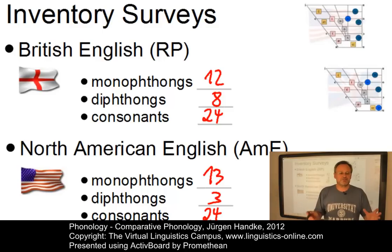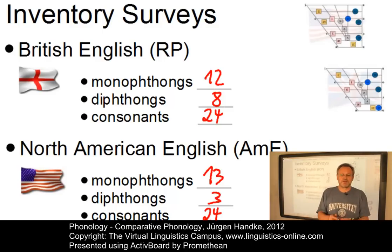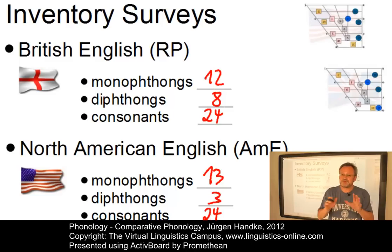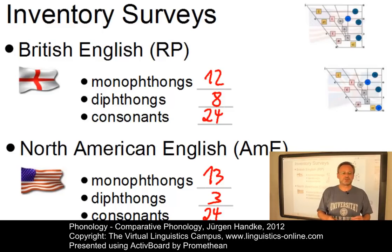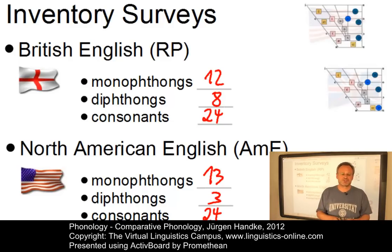Whereas English can be found in the middle, there are extremes. In the Polynesian languages, for example, you only find very small sound inventories, whereas the Khoisan languages, which we have just seen on the African continent, have a total of well beyond 100 sound segments in their systems.